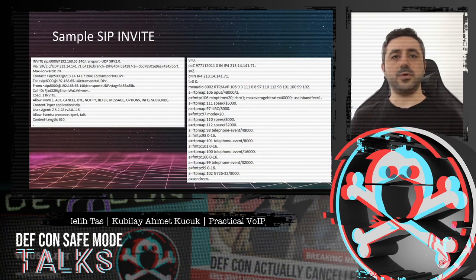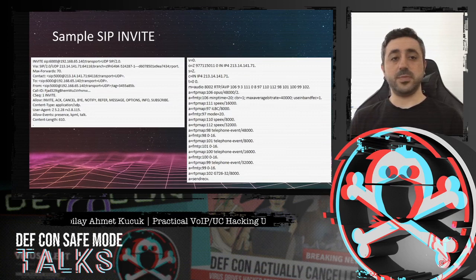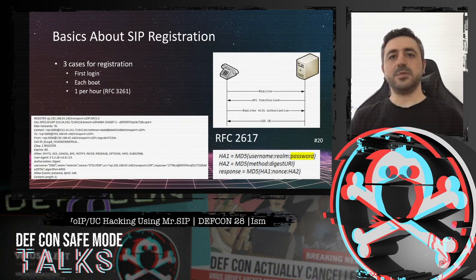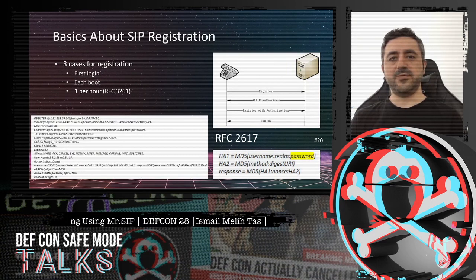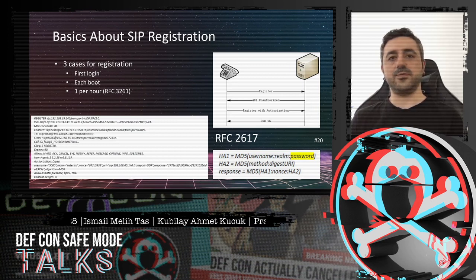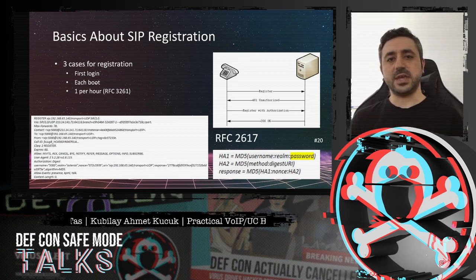This is a sample SIP INVITE message. There are some specific headers and parameters that need to be render-specific and unique for each call. SIP uses a similar mechanism to HTTP known as HTTP Digest. The user password is symmetrical and hashed. In SIP 2.0, the MD5 hashing algorithm is applied to authentication data before they are sent to the server. This is a sample SIP REGISTER message showing a packet capture of SIP authentication requests.